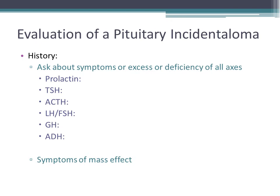For evaluation of pituitary incidentalomas, we start with history and ask about all symptoms of excess or deficiency of all axes, starting with prolactin. Overproduction of prolactin may lead to hypogonadism, galactorrhea, and infertility. Deficiency of prolactin does not affect people that much, so we do not focus on it.